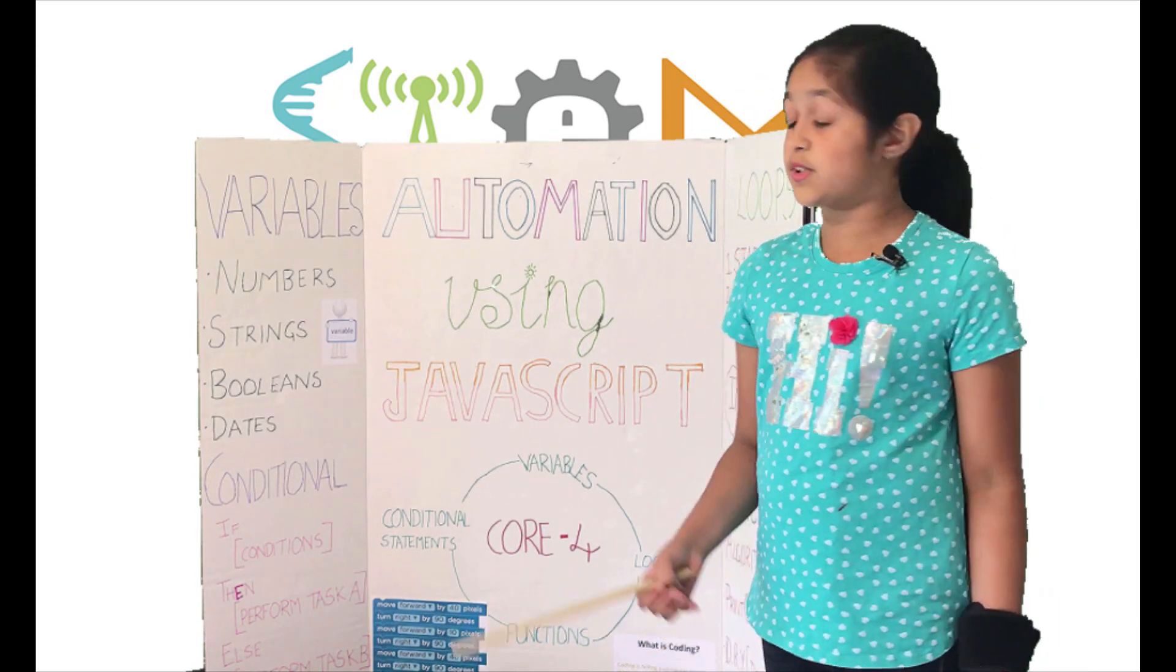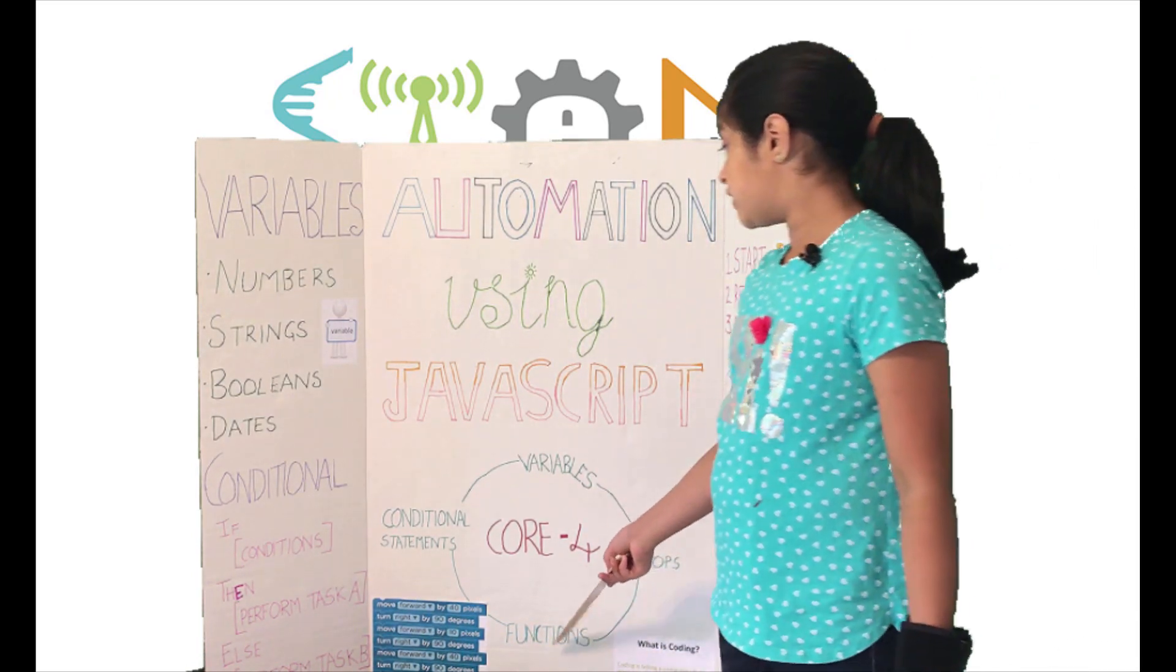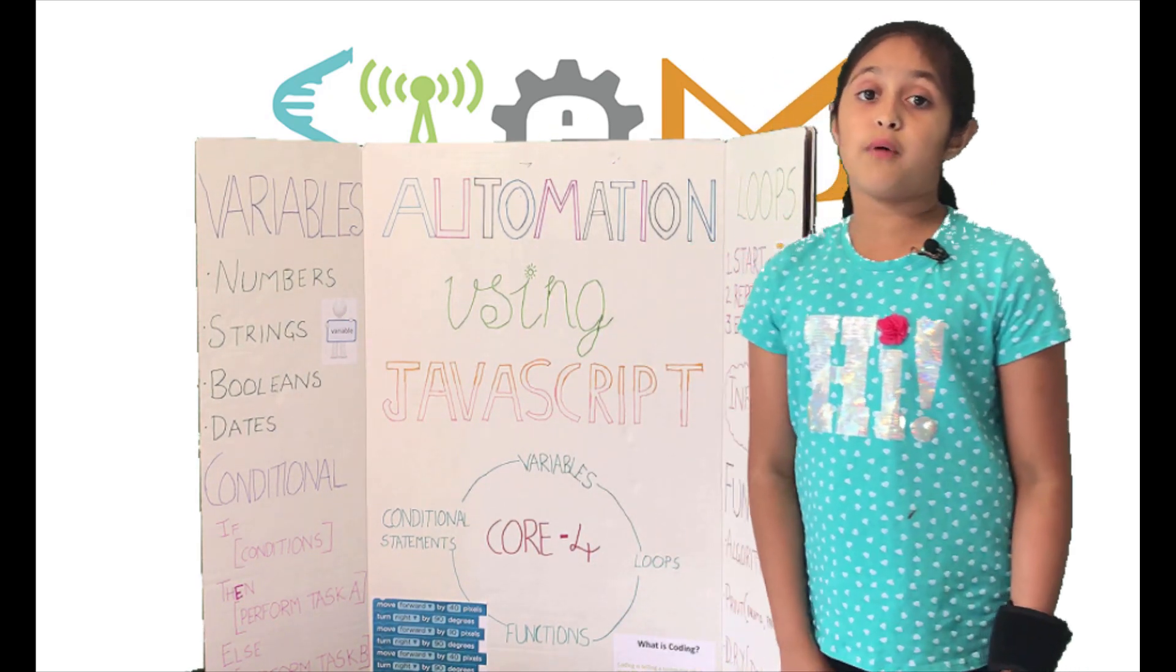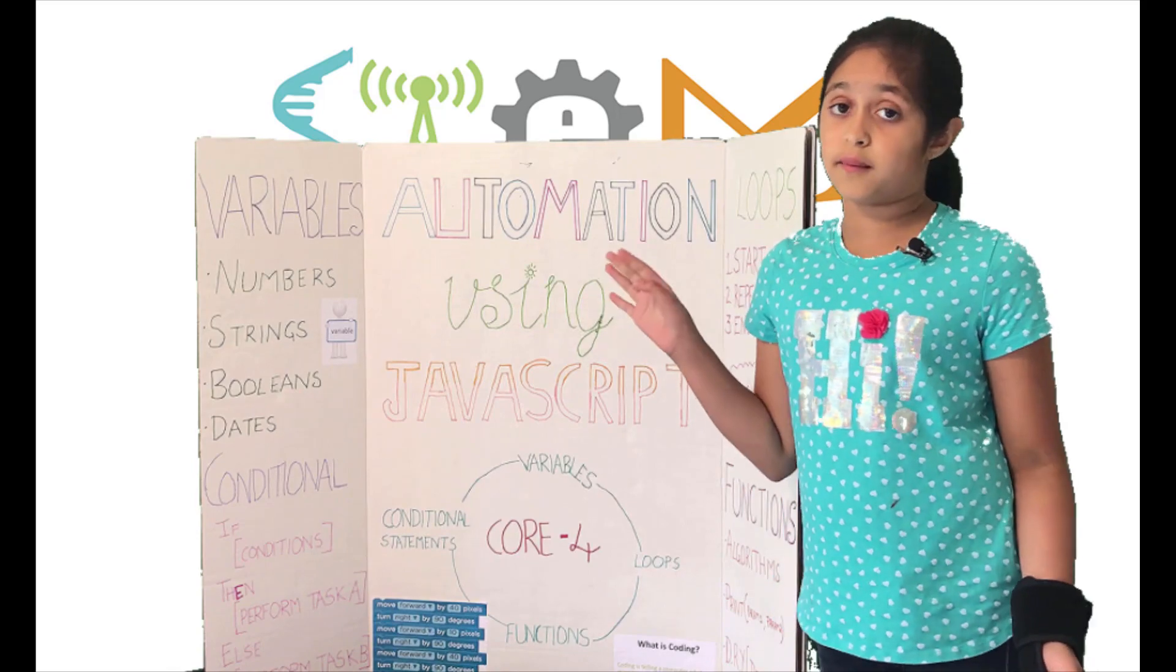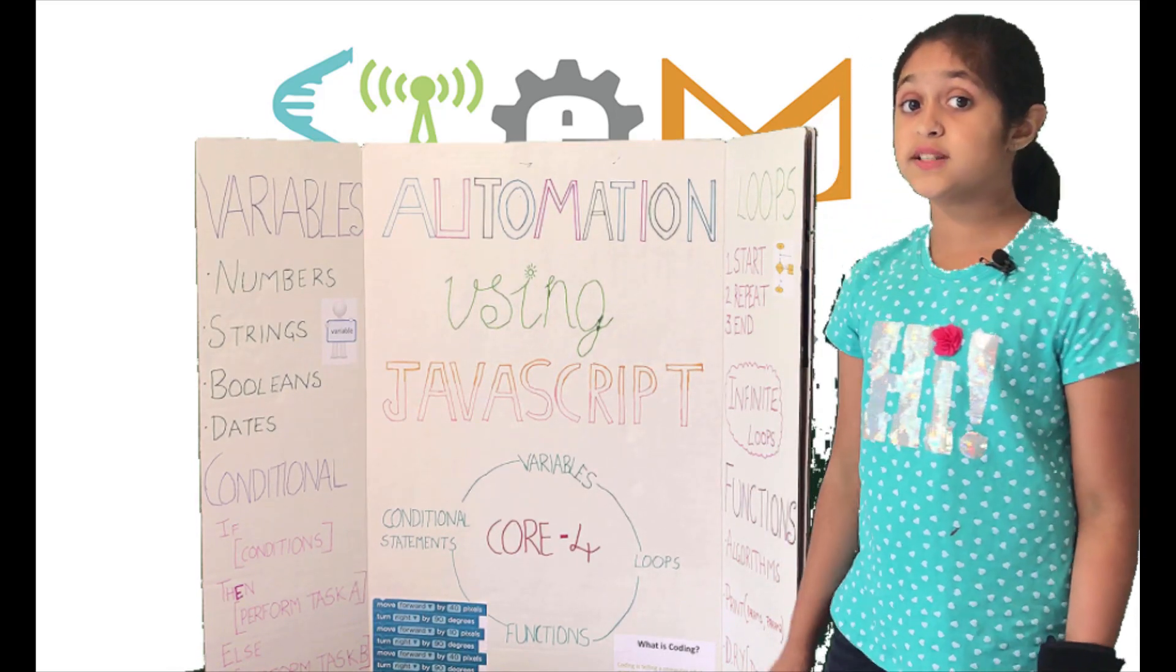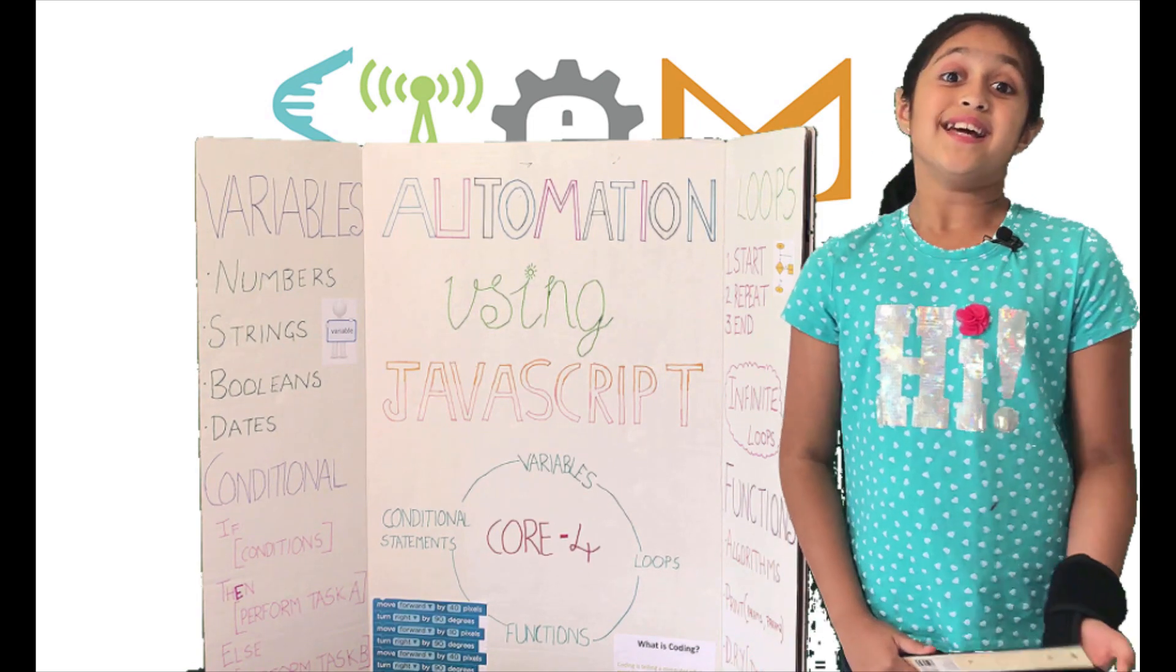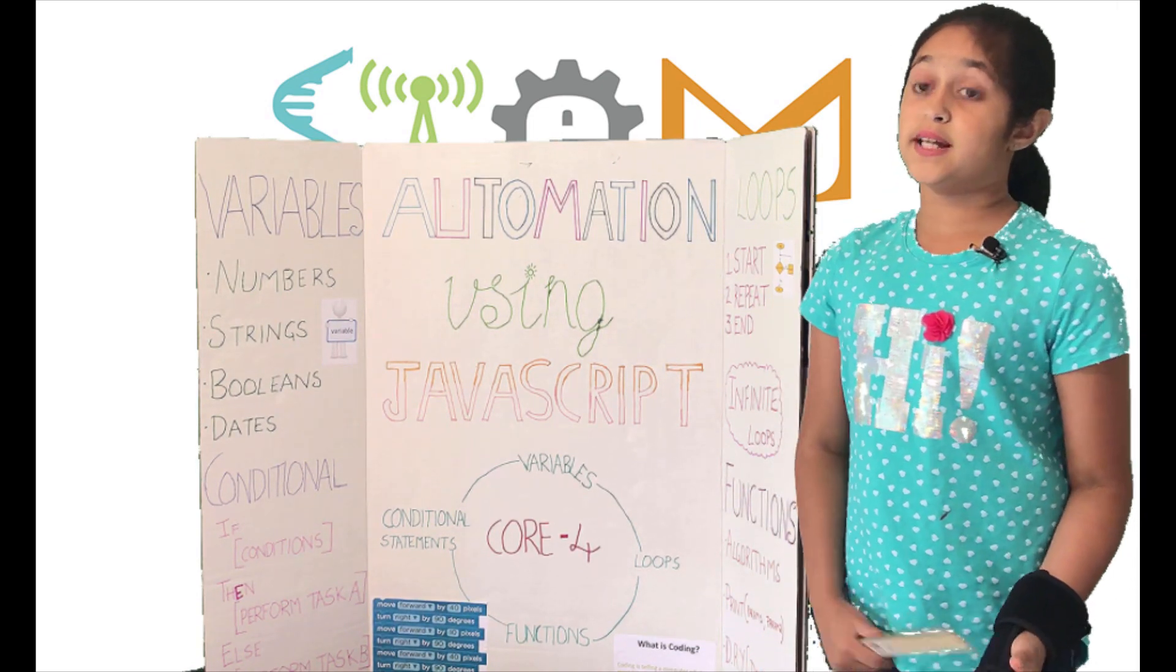In that book, the book taught me about the Core Four principles of coding, and the Core Four principles are variables, loops, functions, and conditional statements. I hope you guys have watched all my coding for kids videos.